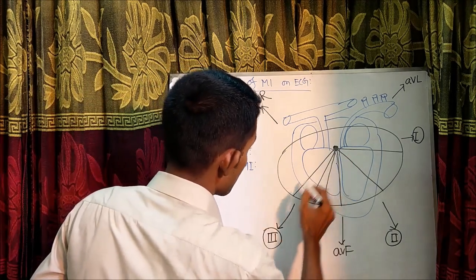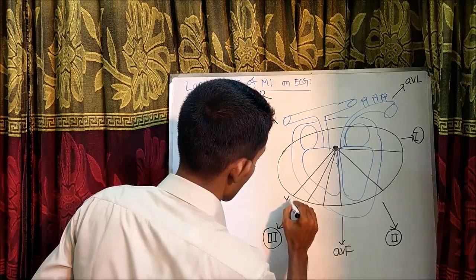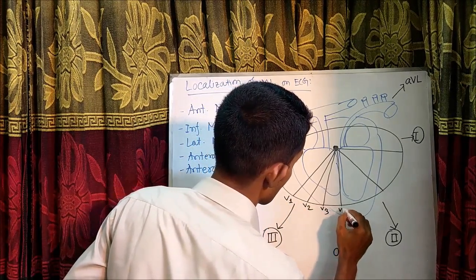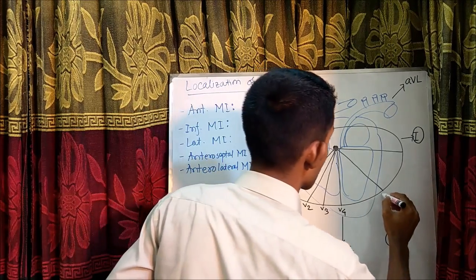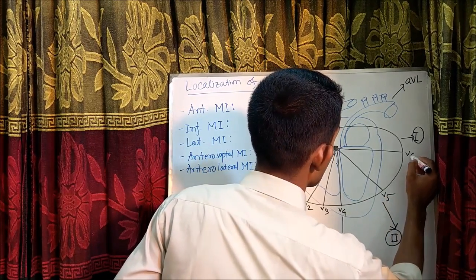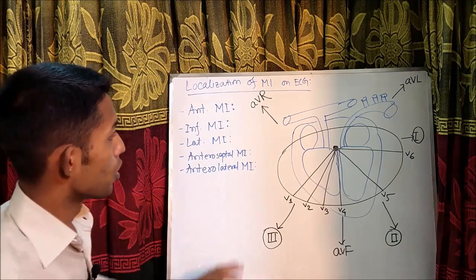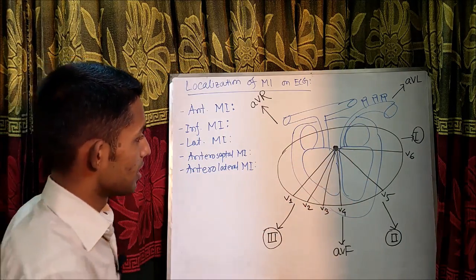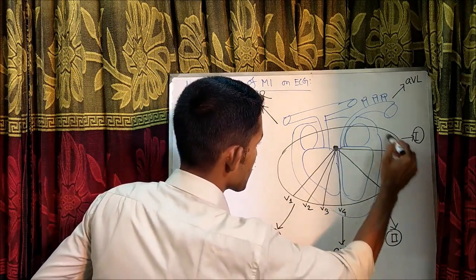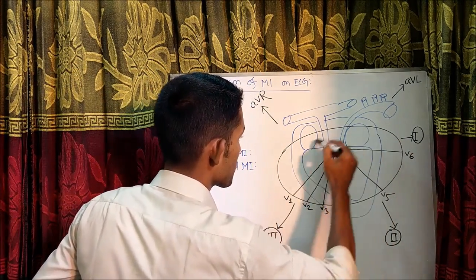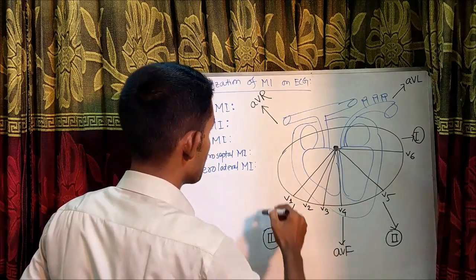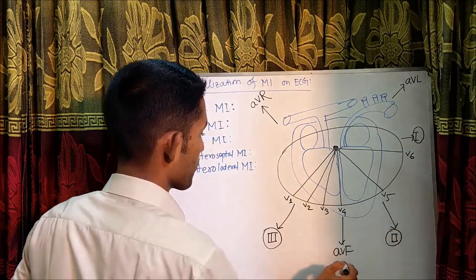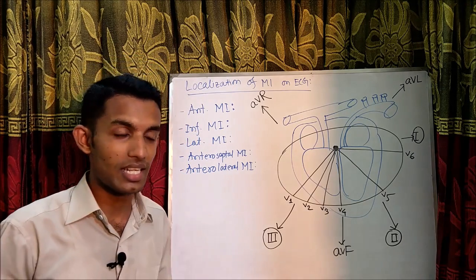Here, this one is for V1, V2, V3, V4, V5, V6. So, this is the view of the heart from all the leads. Here, these are the chest leads — V1 to V6, these are the chest leads. And these are the limb leads: augmented vector right, augmented vector left, 1, 2, augmented vector foot, and 3. These are the limb leads.